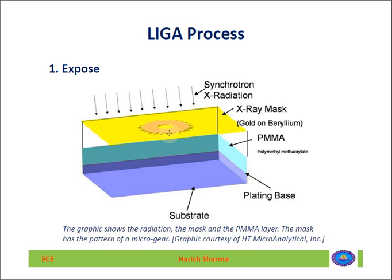This diagram shows the expose procedure. The substrate is shown with a very thick PMMA coating applied on top. It is exposed through the synchrotron X-ray beam using the gold-on-beryllium mask. The beryllium is the transparent part of the mask and the gold forms the opaque part that blocks the X-rays.